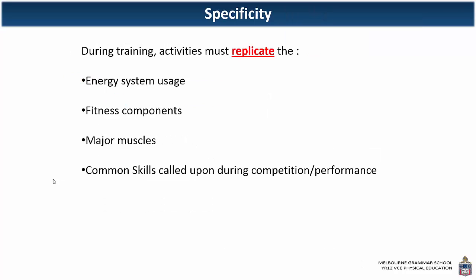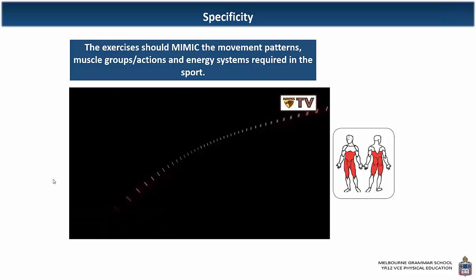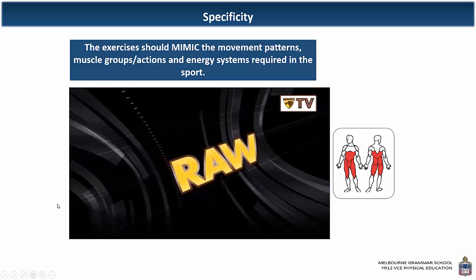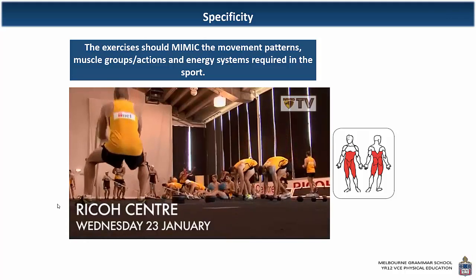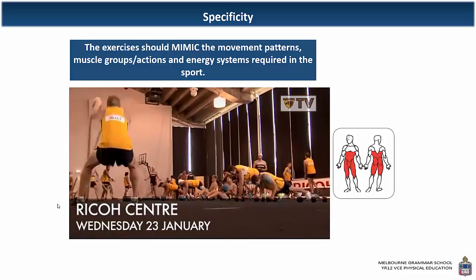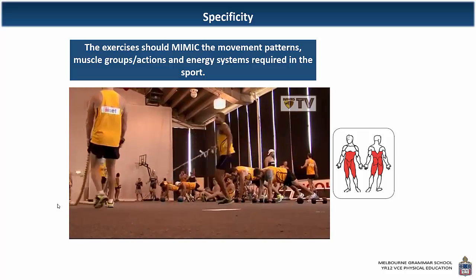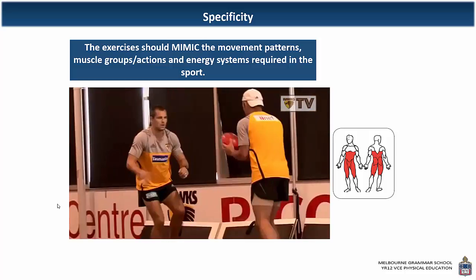Specificity: during training, activities must replicate the energy system, fitness components, and major muscles. Basically, a training program or training session should look like the sport — and that becomes really important when it comes to team sport. We have an example here looking at a circuit training program. Have a think about the muscle groups being used, the actions, and the fitness components in this circuit training program.